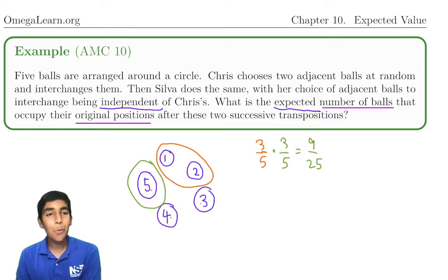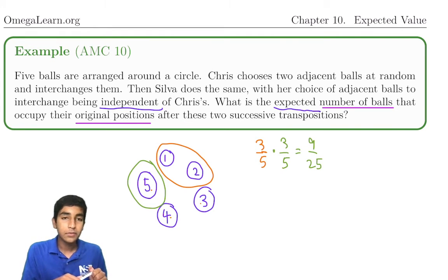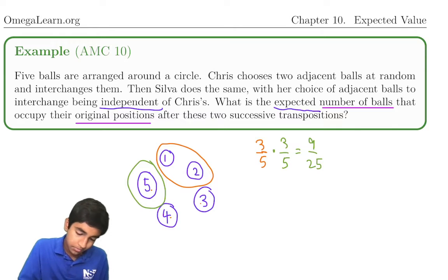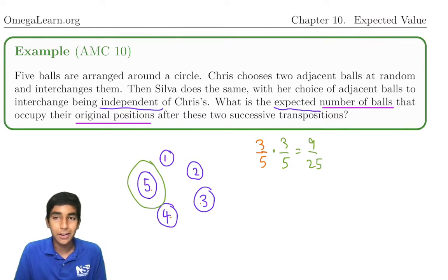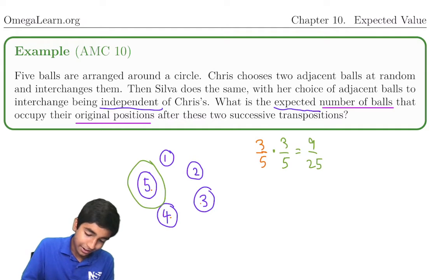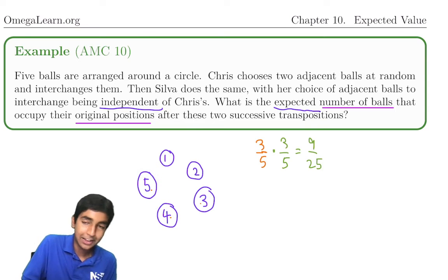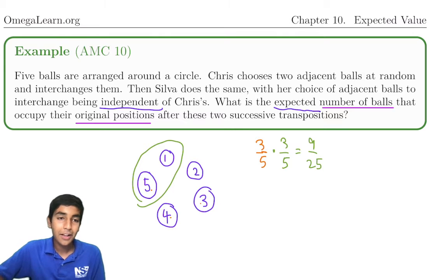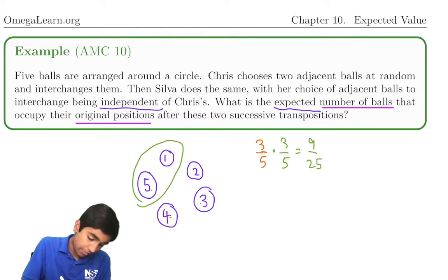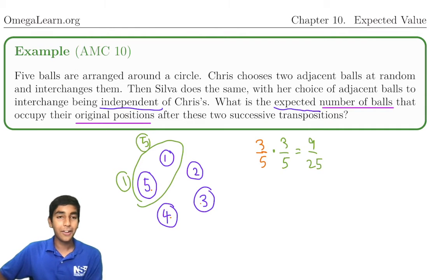Now, what about if maybe after two moves, it returns back? So what if Chris moves some ball some way, and then Silva just moves that ball back? We're going to again take a look at ball number five. Let's say maybe it was chosen. Let's say five and one were flipped. If we flip five and one, then this would be one here, and this would be five over here.